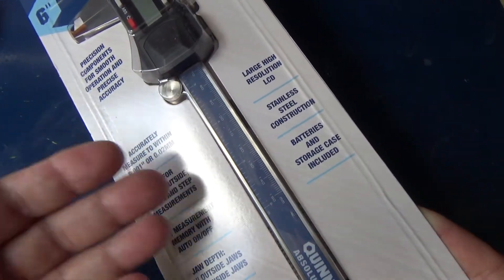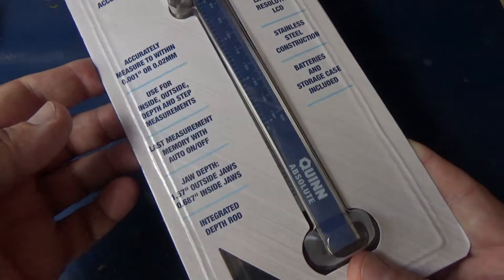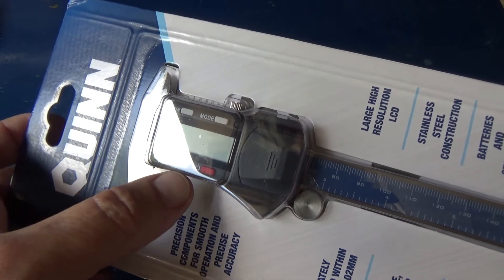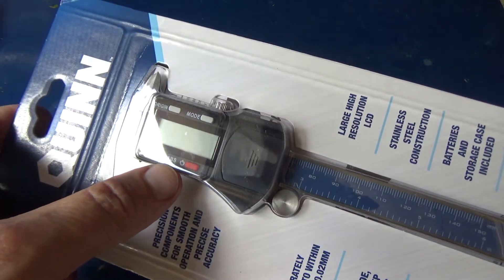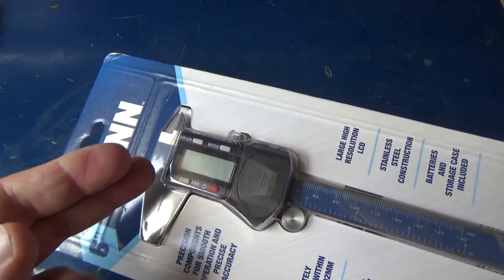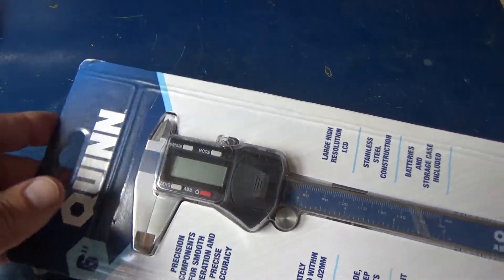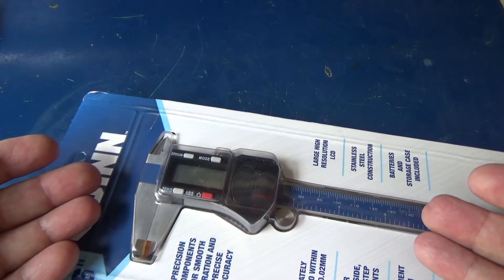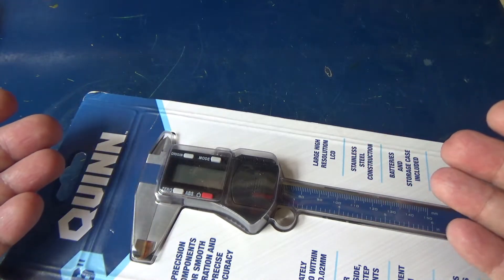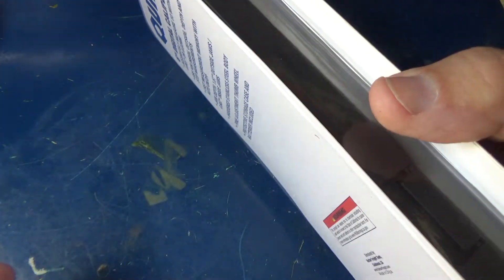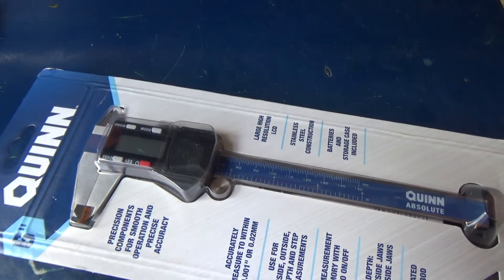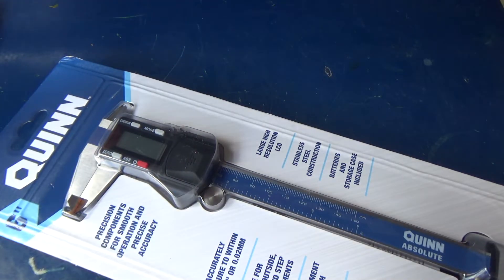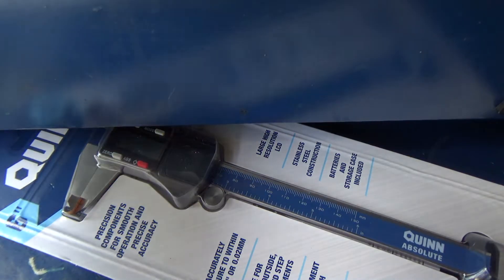It claims it's made out of stainless steel so you shouldn't have problems with surface rust. It is an absolute style digital caliper, meaning it's got an absolute encoder in it. So even with the unit turned off, if you move this it's still gonna know exactly where it's at. When you turn it on, whatever the measurement is is what it actually is. We're gonna go ahead and take this out of the package. In fact, let me just do that on screen.